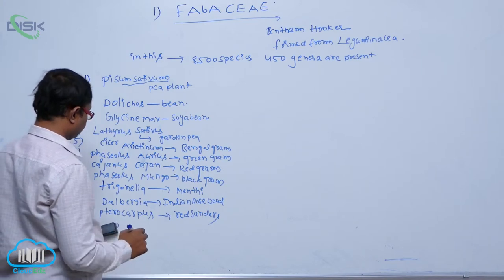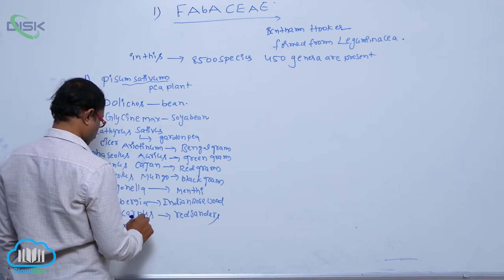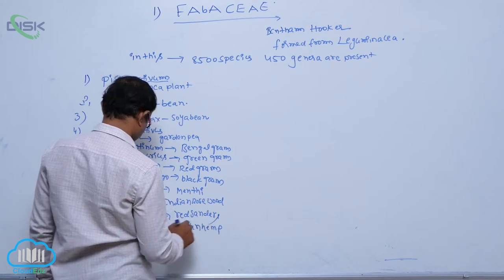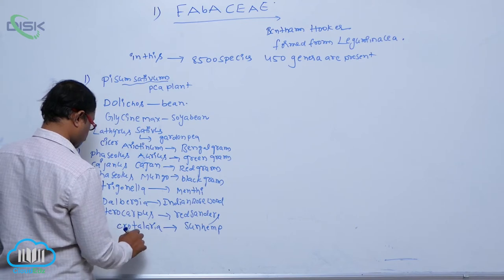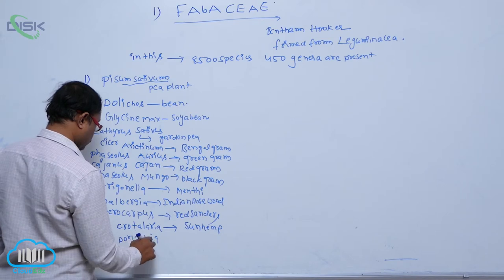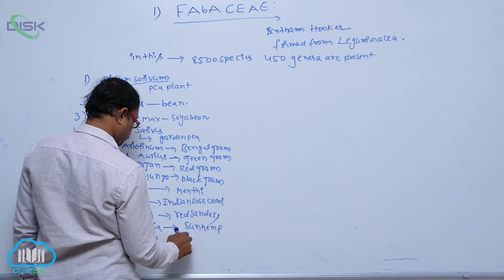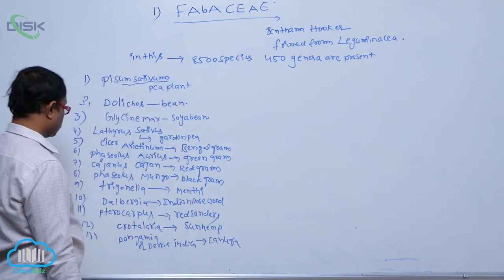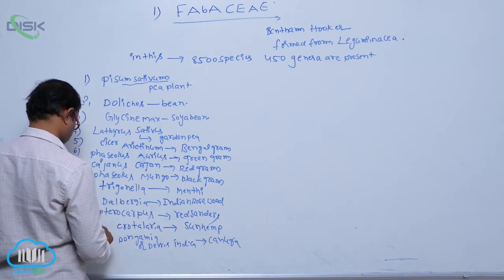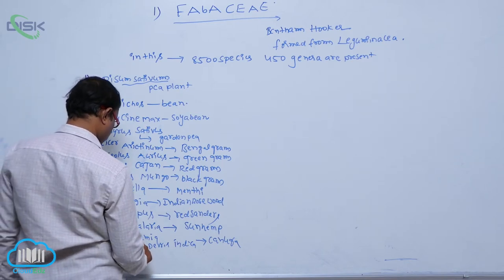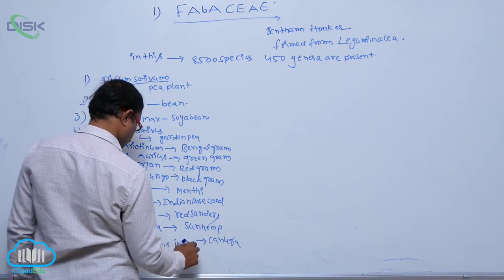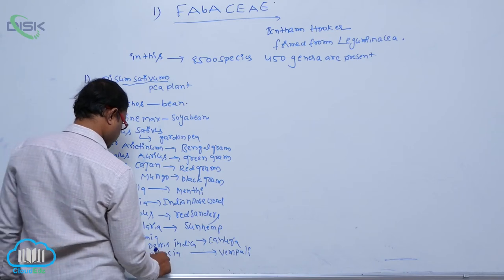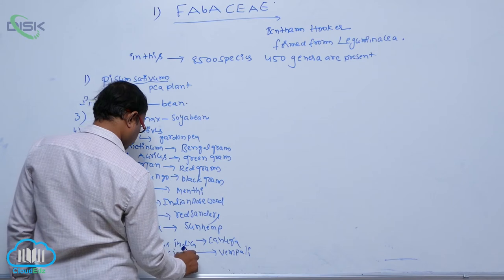Crotalaria, sunhemp. Pongamia pinnata. Indigofera indica, kanuga. After that, Tephrosia, vempali. Sesbania, linseed.